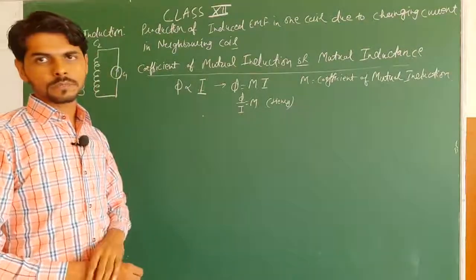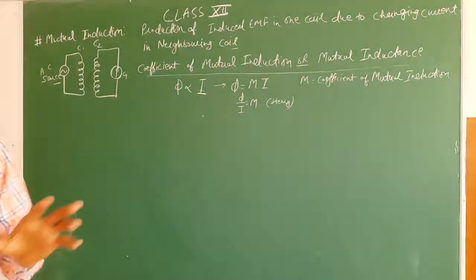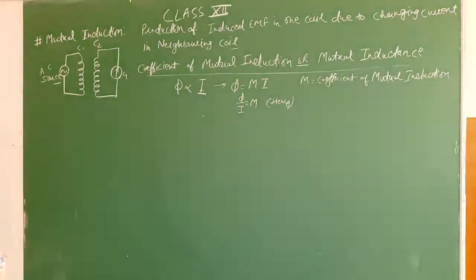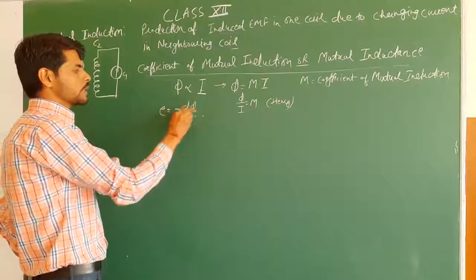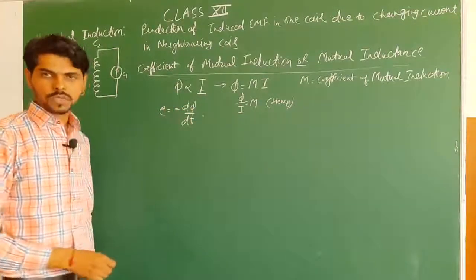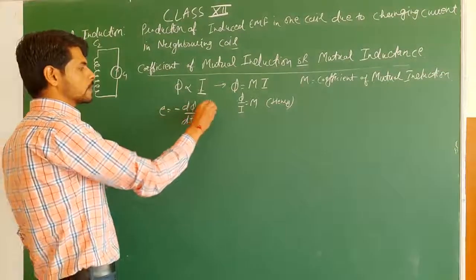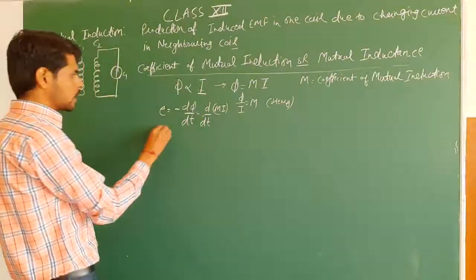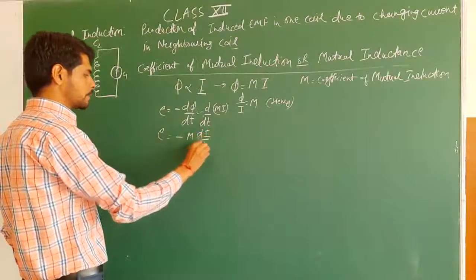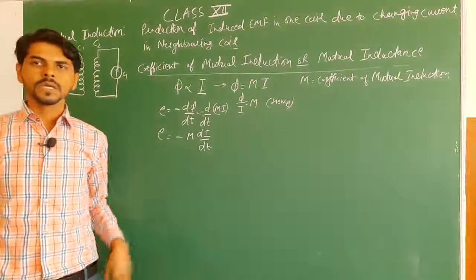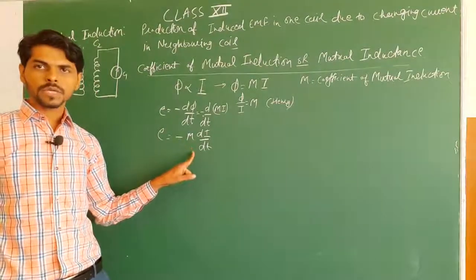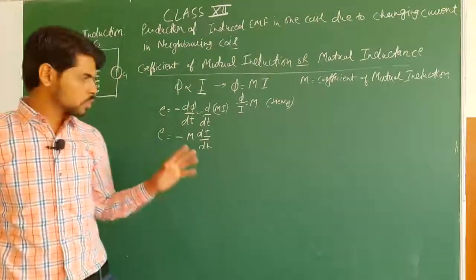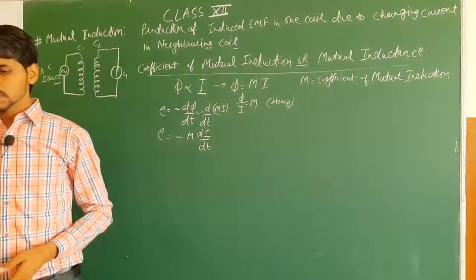If there are N number of turns, the total flux is N·φ. Also, the induced EMF e equals minus dφ/dt. Substituting φ = M·I, we take the derivative: e equals minus M·(dI/dt). So induced EMF is equal to the product of the coefficient of mutual induction and the rate of change of current — this is the induced EMF in the neighboring coil.